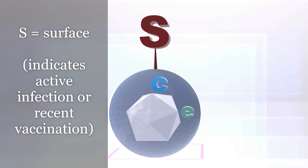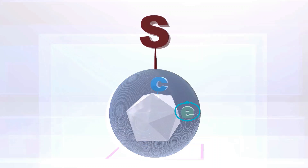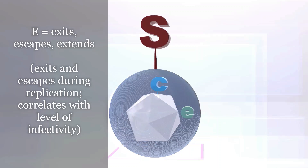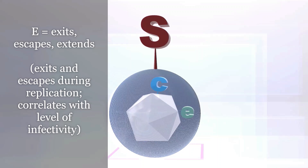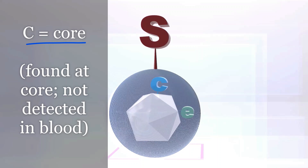The HBe antigen floats between the envelope and the core, and it actually escapes and exits during replication — that's what E can stand for: exits and escapes. It can also stand for extends, because it extends the infection. Since this antigen rapidly replicates during the acute phase, it measures the level of infectivity. The higher the level of the e antigen, the more infectious the patient may be.